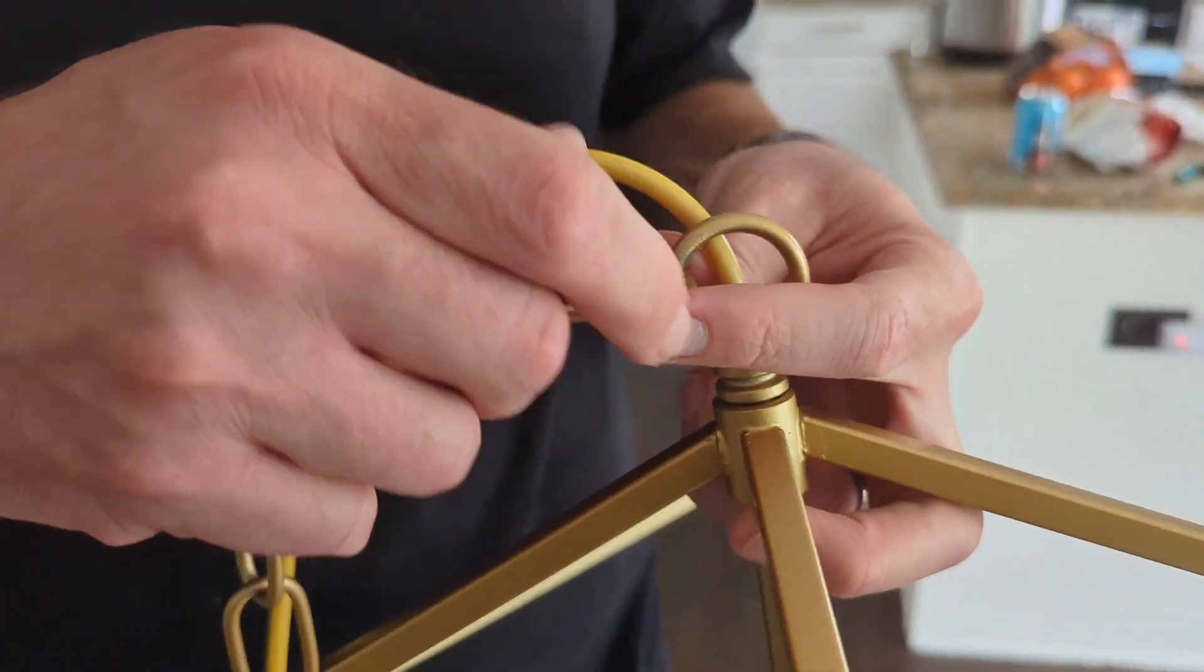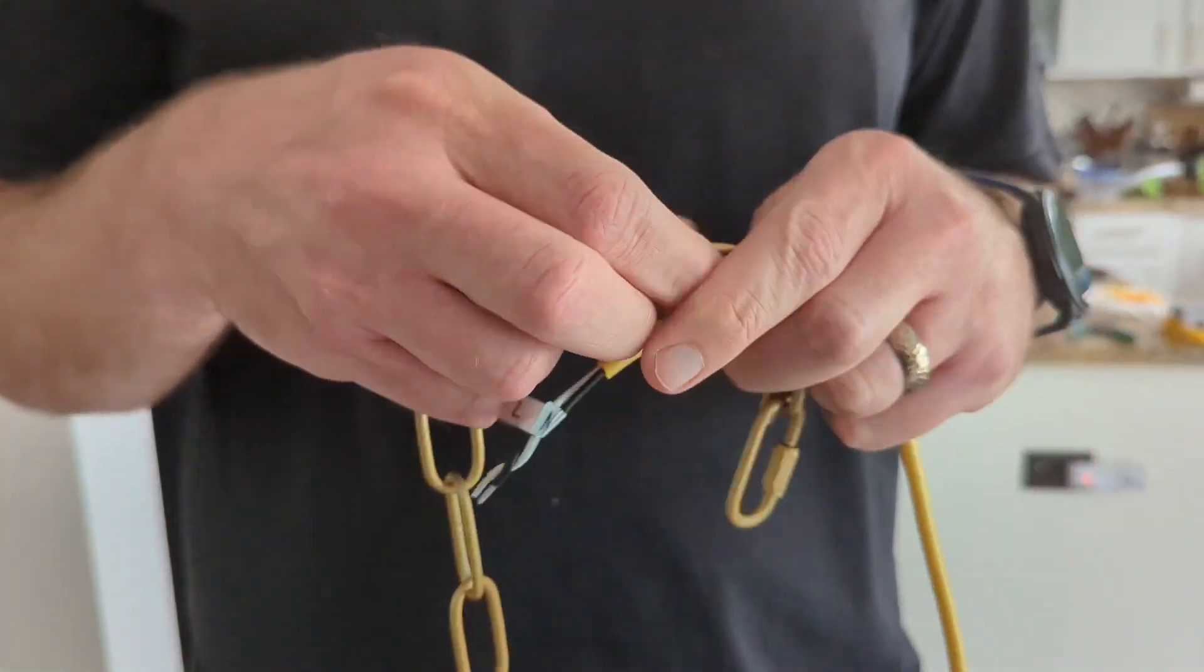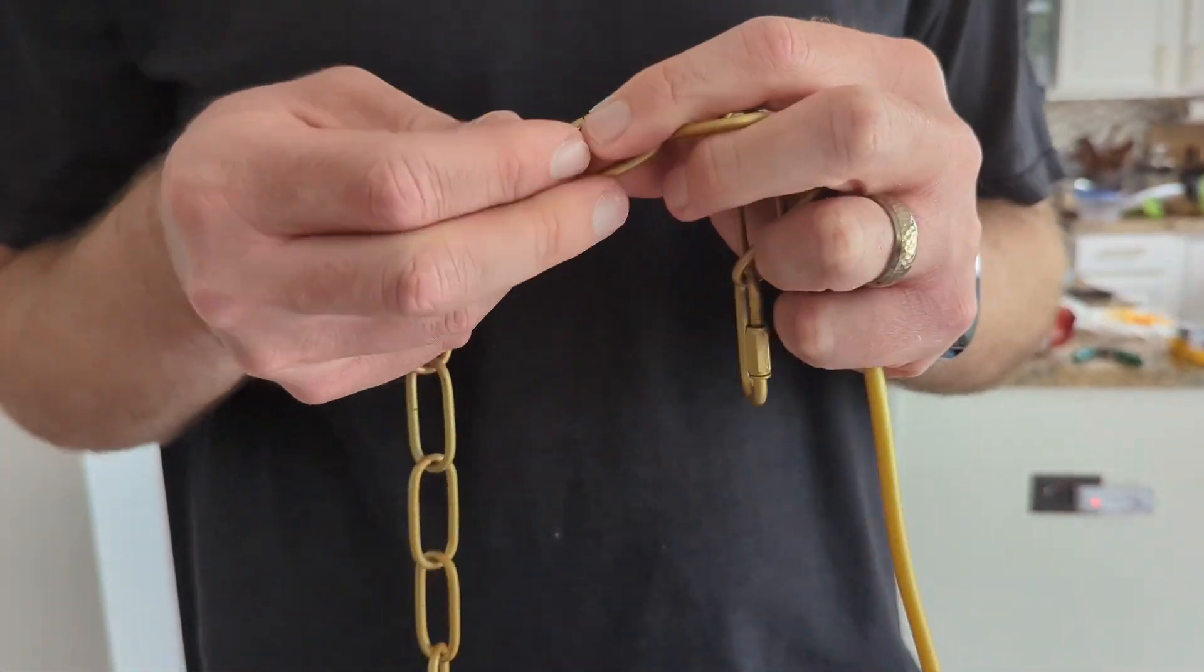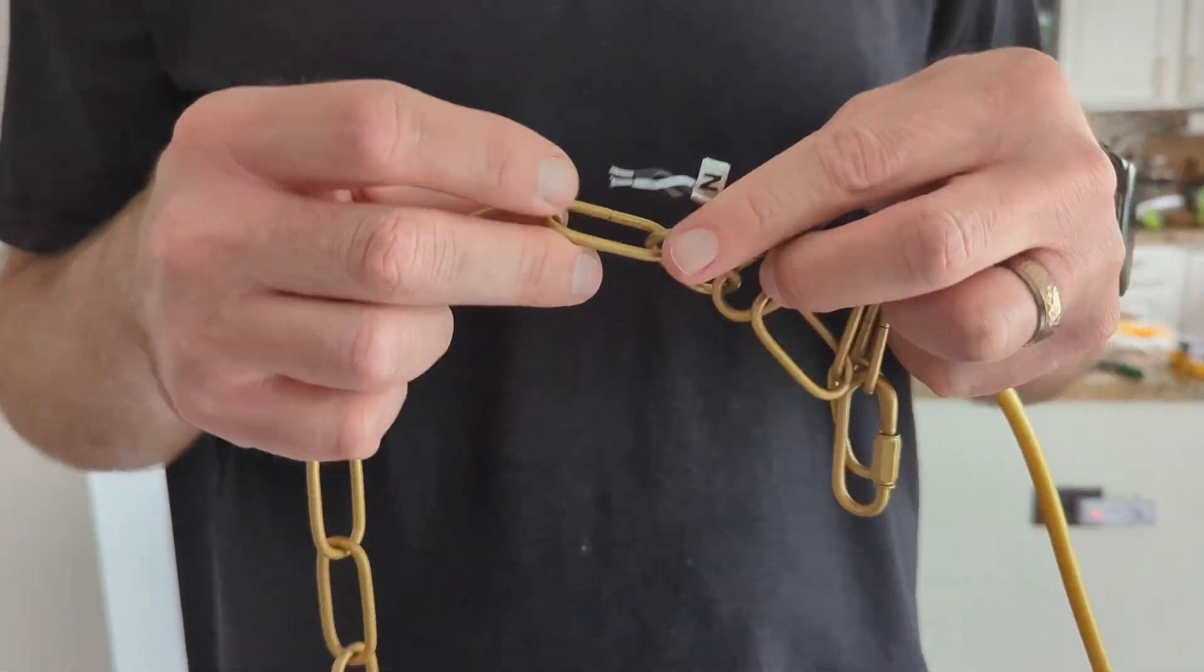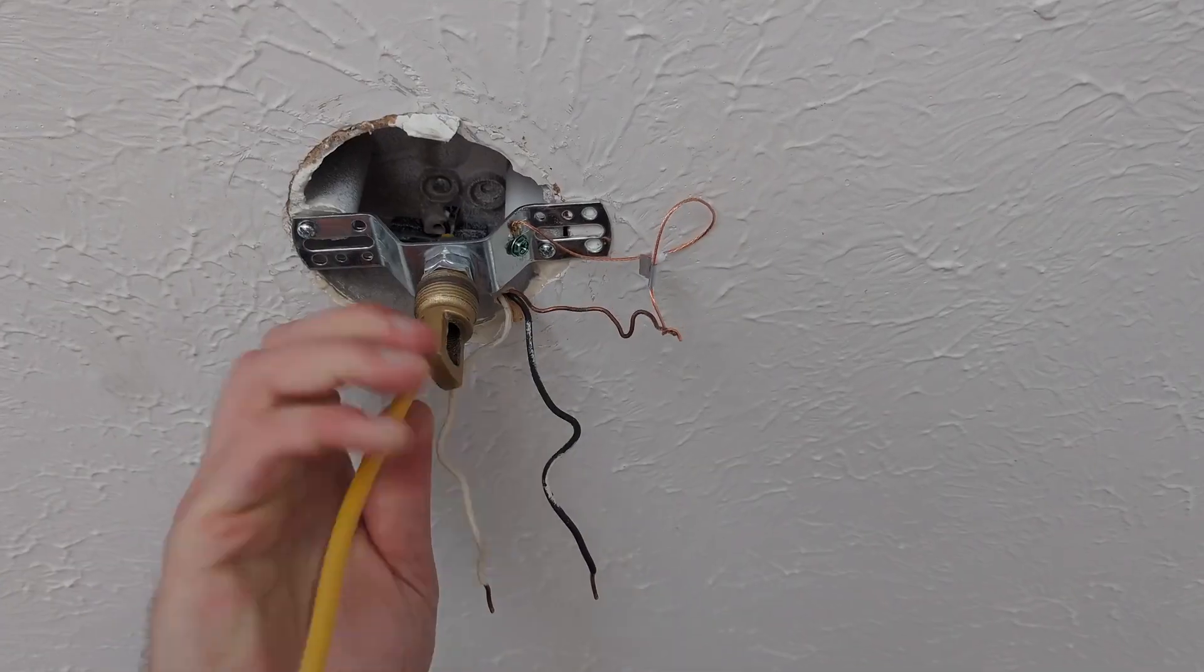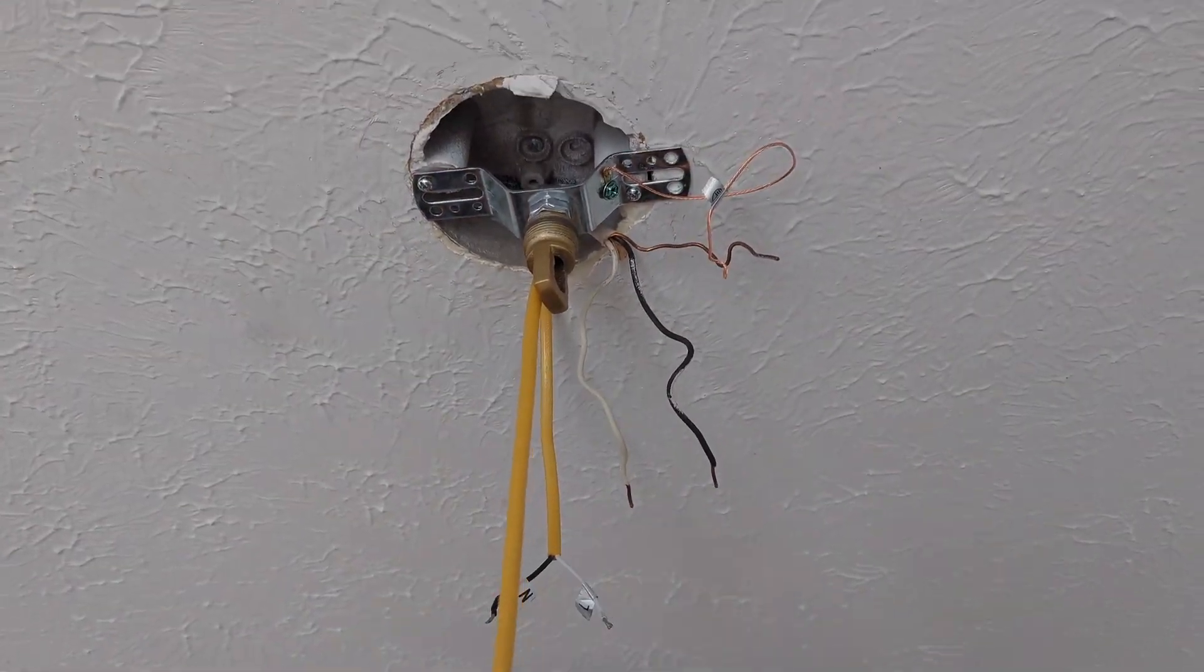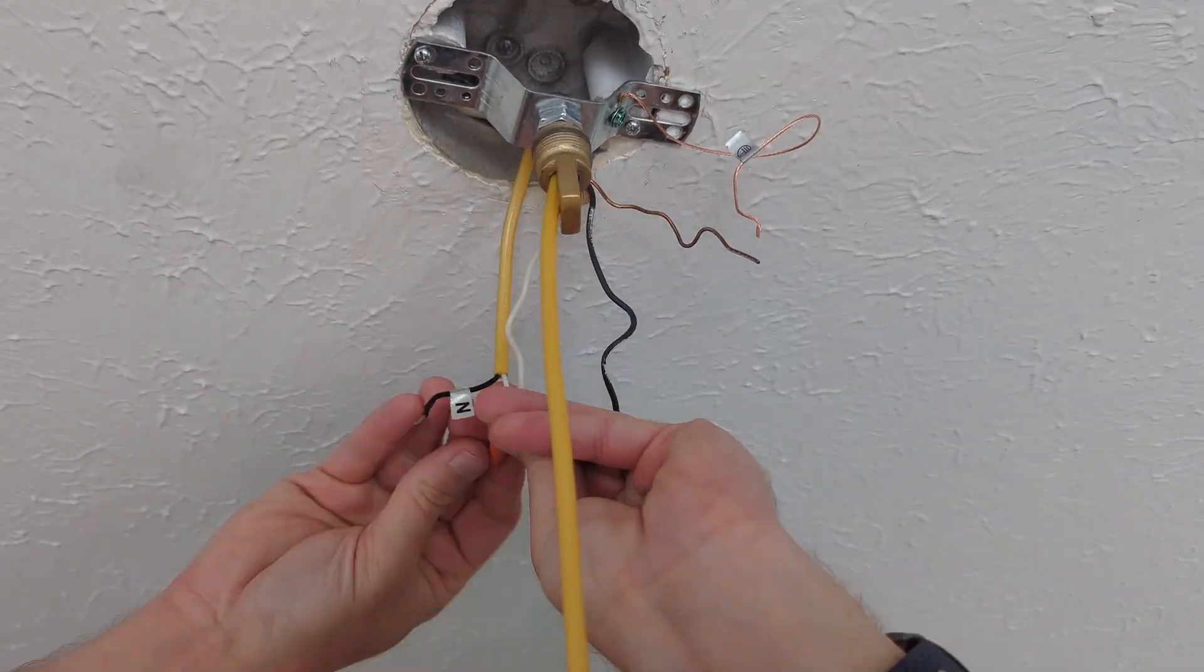We decided to add the sides on afterwards so the light itself was lighter while hanging it up, and then we added them afterwards as you'll see. You'll just put the chain through, going every few links there so that it goes right nicely on there, then just push it through and get your wiring all done.